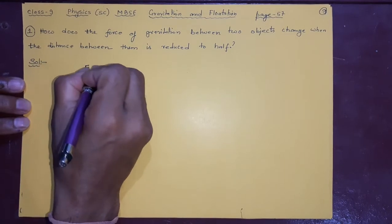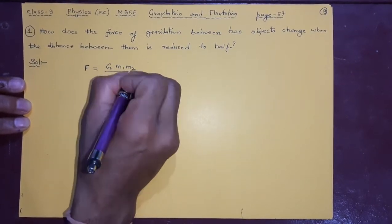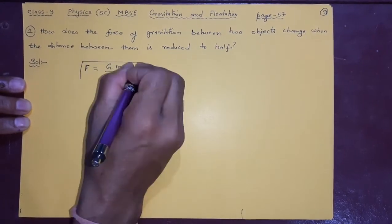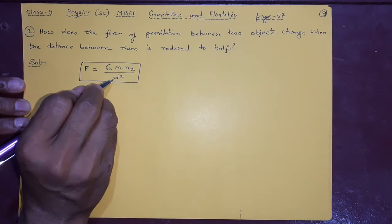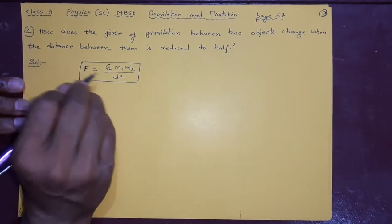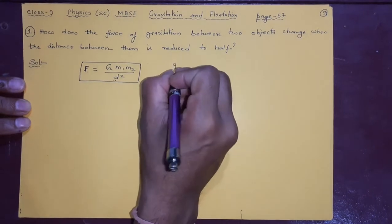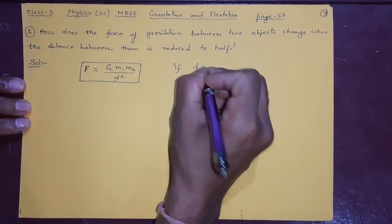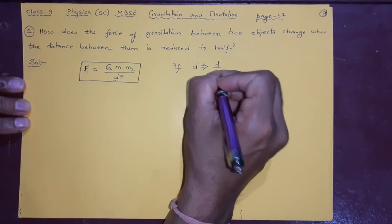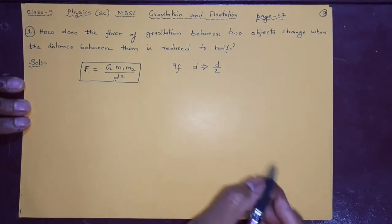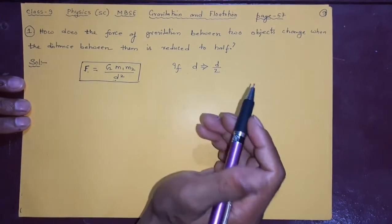Suppose F is equal to G*m1*m2 by d square. You know this formula. Here we are talking about d. If I change this d into half, what will happen to F? This is the connection between them, this is your question. Now if d is changed to d by 2 - half of d, when it is reduced means getting less, to half, d becomes d by 2 - then what will happen?